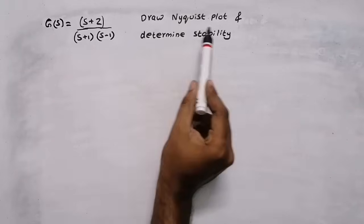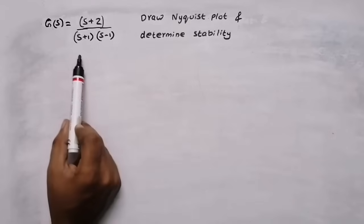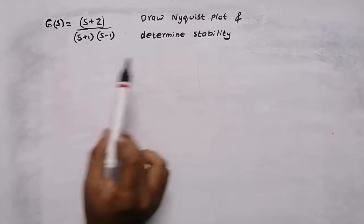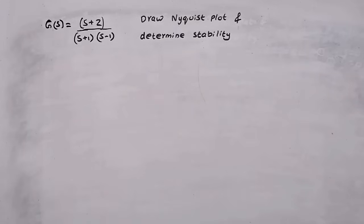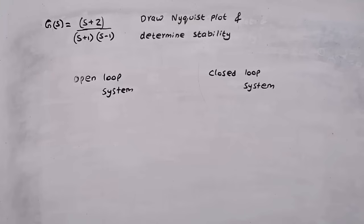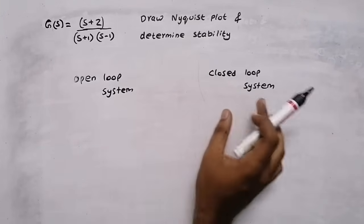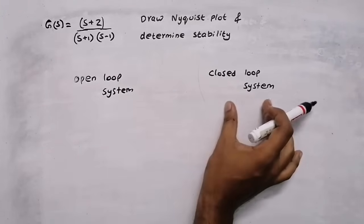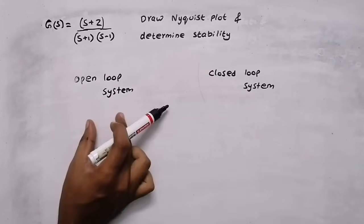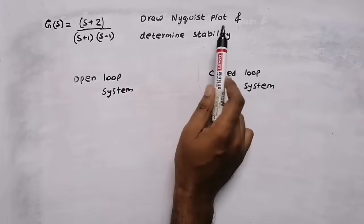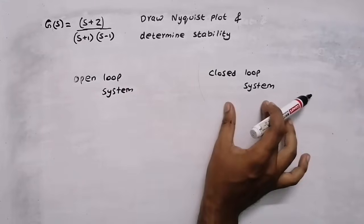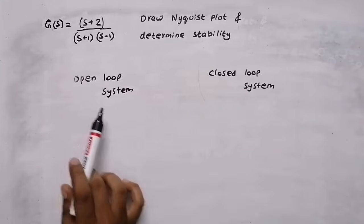In this video we need to draw the Nyquist plot of the system and determine the stability. Nyquist plot is used to find the stability of a closed loop system from an open loop system. This question is an open loop system.